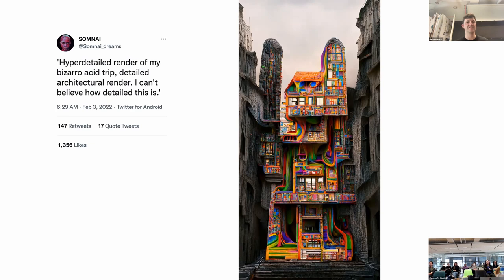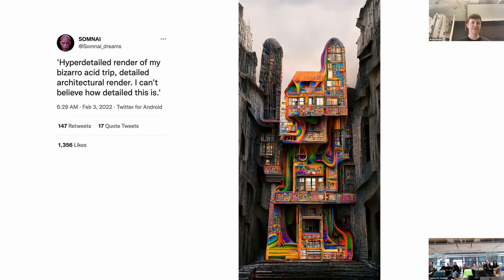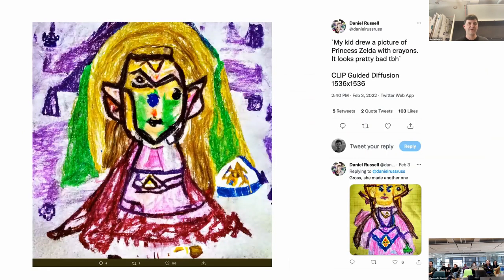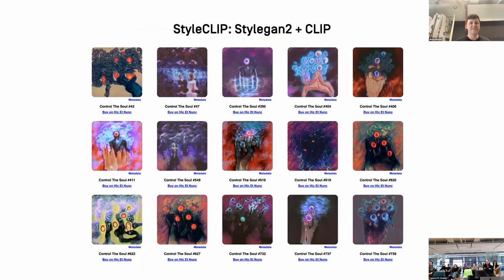Some of the images look very much like architectural renderings, and what's interesting is how at the same time they look familiar and quite alien to us — reminiscent of painters like Francis Bacon, whose work lives on the boundary between figuration and estrangement. In the right context the relation between text and image can also be quite funny — one image generated by the prompt 'my kids drew a picture of Princess Zelda with crayons' looks pretty bad, which I find much better for its humor.